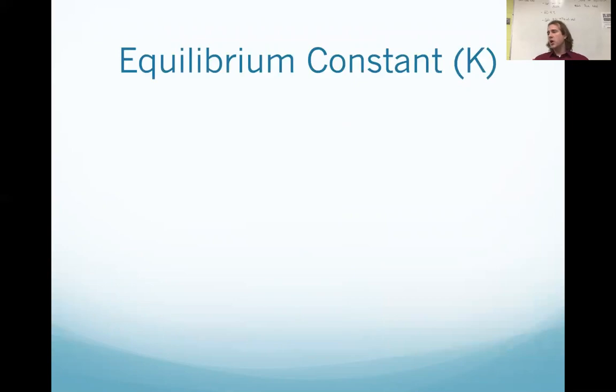Let's talk about K. So usually, typically it's a large italicized K, different from little k. Little k was the rate constant from our kinetics unit. Little k we know had all these units. Big K ain't got them.